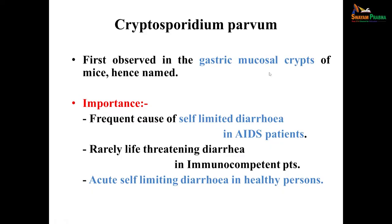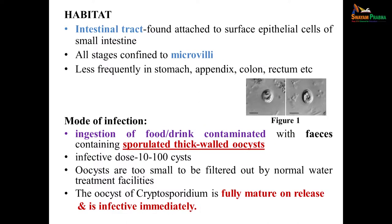Cryptosporidium parvum was first observed in gastric mucosal crypts of mice and hence was named the Cryptosporidium genus. It is a frequent cause of self-limited diarrhea and also in AIDS patients. Rarely it can cause life-threatening diarrhea in immunocompetent patients. Acute self-limiting diarrhea in healthy persons is a common feature. It stays in the intestinal tract, found attached to surface epithelial cells of the small intestine. All stages are confined to microvilli, and can less frequently be found in the stomach, appendix, colon, or rectum.